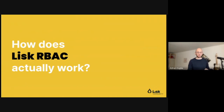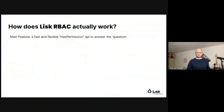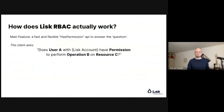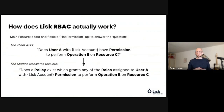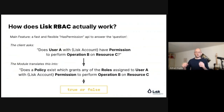So how does Lisk RBAC actually work? The main feature it has is the hasPermission API, which answers the question when a client asks: does user A have permission to perform an operation on a given resource? The module takes these inputs and translates them into: does a policy exist which would grant any of the roles that user A has assigned the permission to perform operation A or B on resource C? This returns a plain Boolean — true or false — and then the application can go on and do what it wants with this permission information.